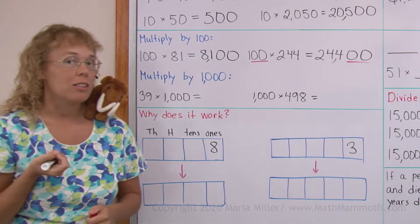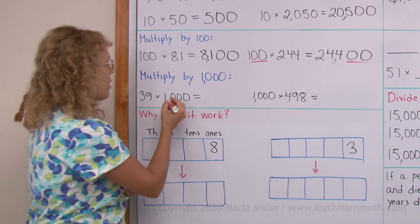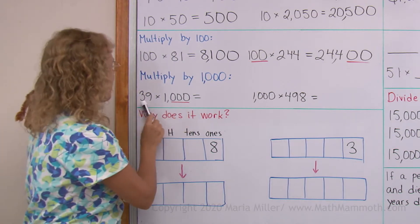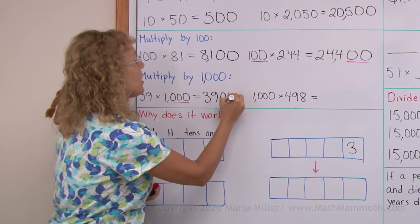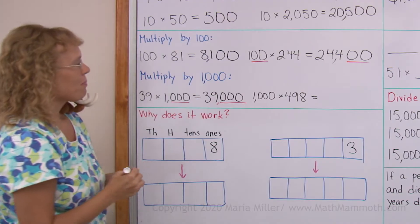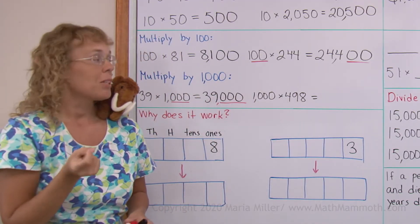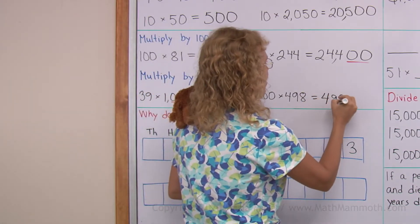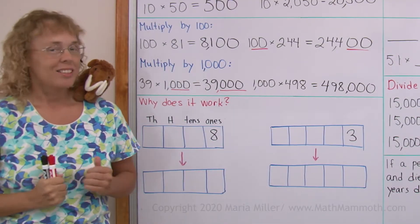Okay, how about multiplying by 1,000? It's going to be the same idea. 1,000 has three zeros. So when we multiply a number by it, we just write the number 39 and then write three zeros after it. 39,000 or 1,000 times 498, we get 498,000. Like this. 498 and three zeros. All right, so that was easy, right?